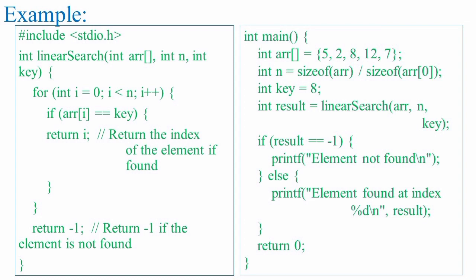Here is an example of linear search implementation in C programming. In this example, the linear search function takes an array arr, its size n, and the element to search key as parameters.